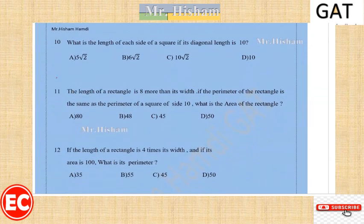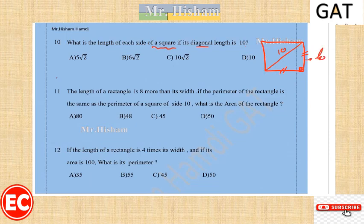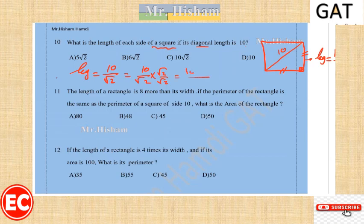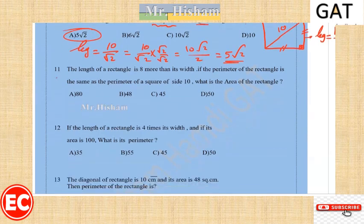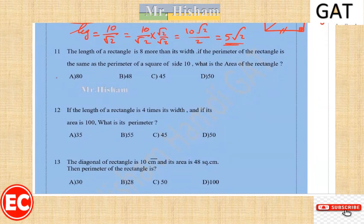Question ten: what is the length of each side of a square whose diagonal is 10? Using the special right angle triangle, the leg equals the diagonal divided by root 2. So 10 divided by root 2, multiplied by root 2 over root 2, gives 10 root 2 over 2, which equals 5 root 2. The right answer is A.